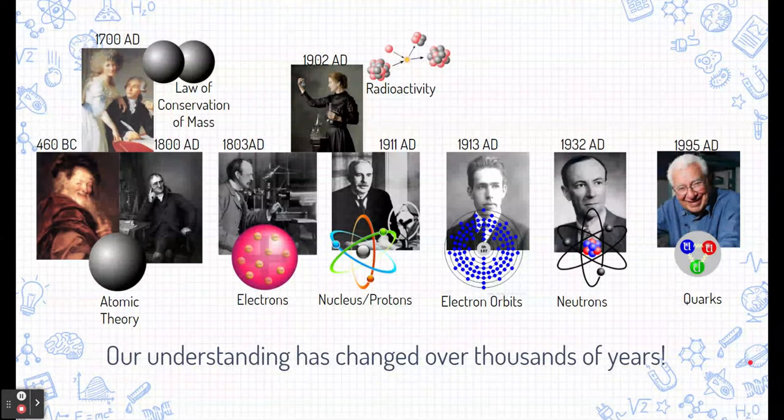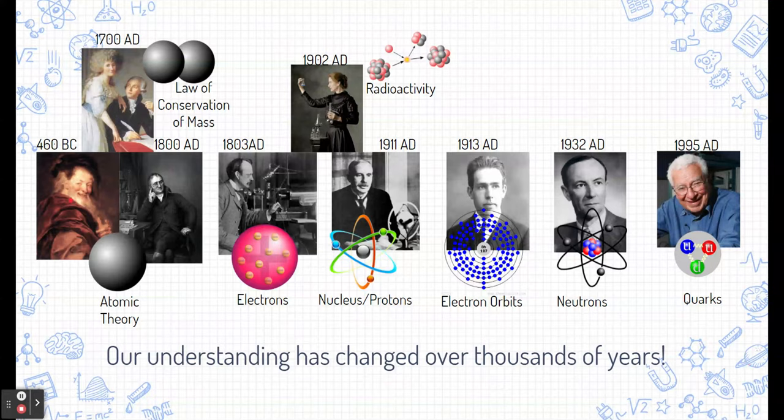Before we directly answer that question, I want to pay tribute to all the scientists who help contribute to our knowledge of the atom over the years. Even back in 460 BC, Democritus determined or came up with the idea that atoms exist, and he came up with the term atomos, meaning uncuttable. Later on, Marie-Antoine Lavoisier came up with a law of conservation of mass to help us explore how different pieces of matter are made of particular particles.